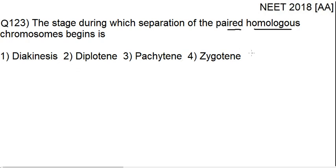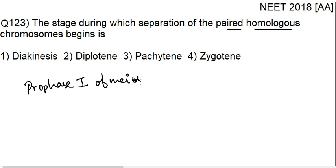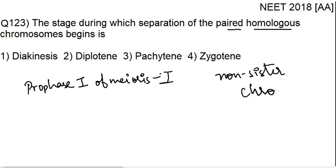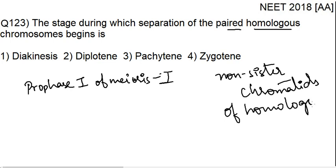All of these are stages that we see in prophase 1 of meiosis 1. We can see that crossing over happens between non-sister chromatids of homologous chromosomes.